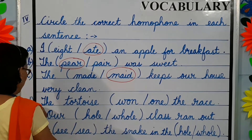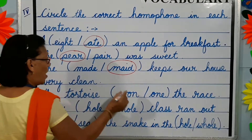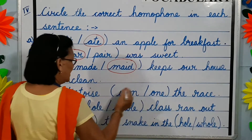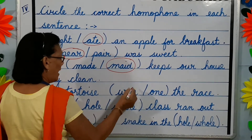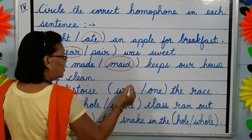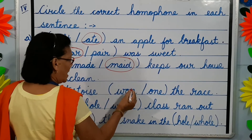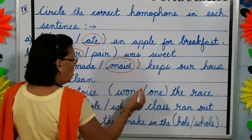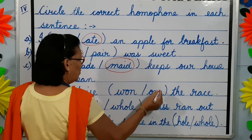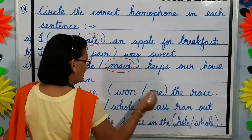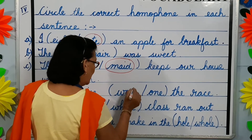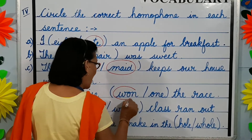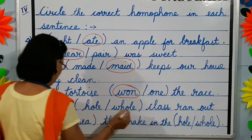D. The tortoise won the race. W-O-N: won is to win — past tense of win. O-N-E: one is a number. The tortoise won the race.